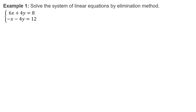Let us have an example. For you to eliminate a variable by adding, they must have the same coefficient but different sign. Let us see the coefficient of each variable. For variable x, we have positive 6 and negative 1 — as you can see, they are different. For y, we have positive 4 and negative 4, the same coefficient with different sign. So, positive 4 plus negative 4 will give us 0. Therefore, we can eliminate y.